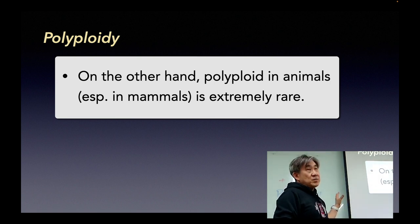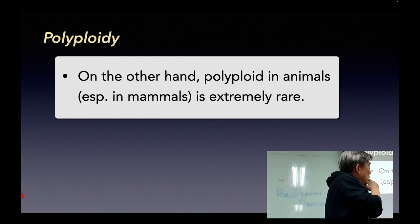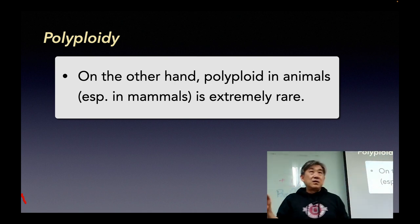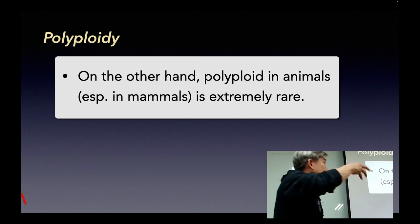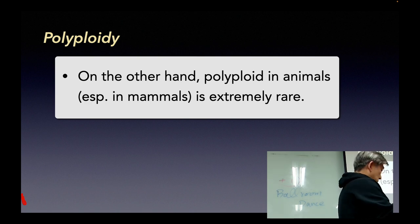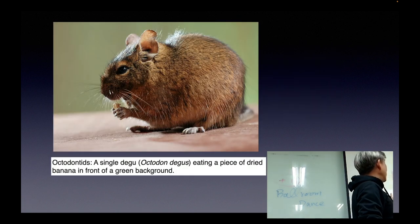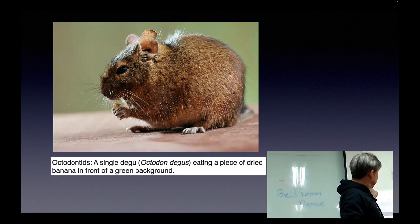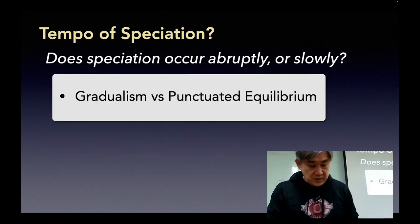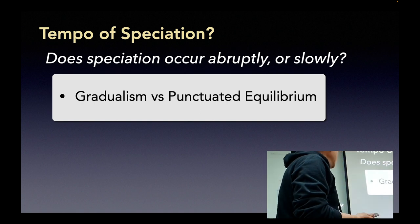What about animals? Only one or two cases have been reported where this tetraploid — as I said, in animals the offspring having more than diploid chromosomes is extremely difficult to survive. But on very rare occasions, in South America, a mouse-like rodent species is surprisingly tetraploid.